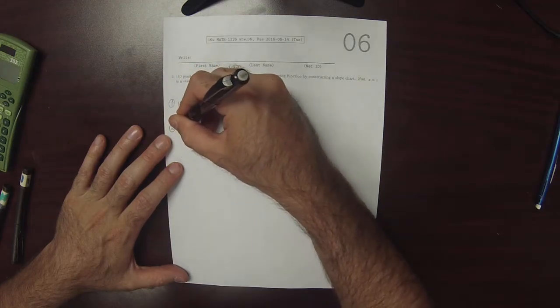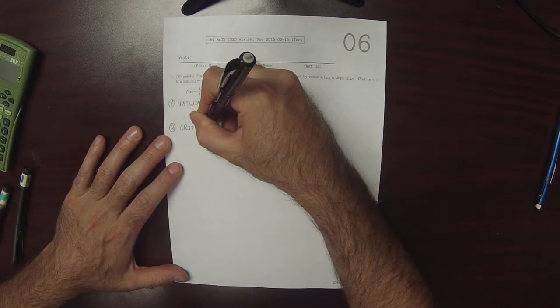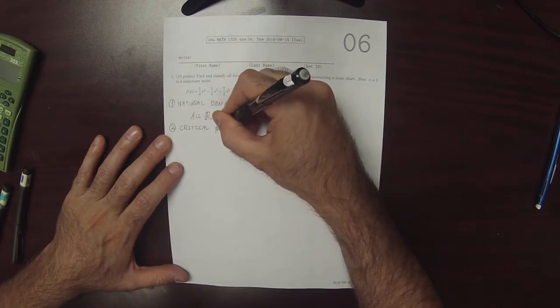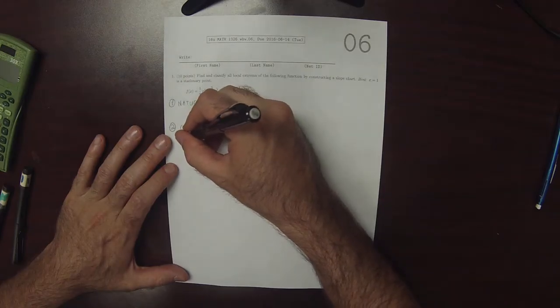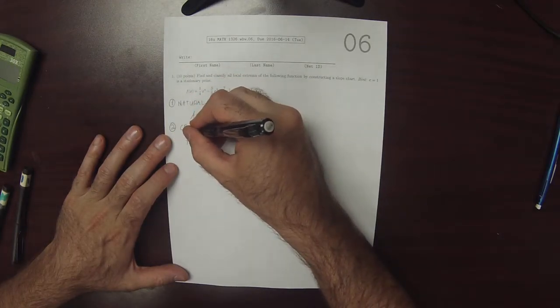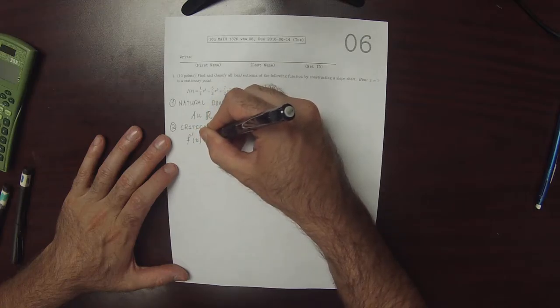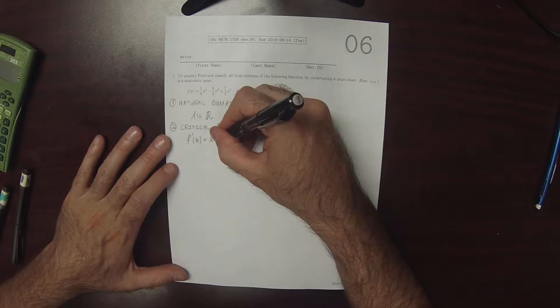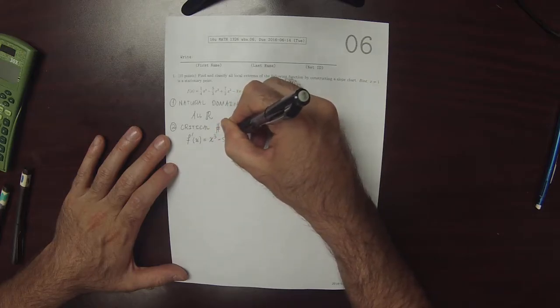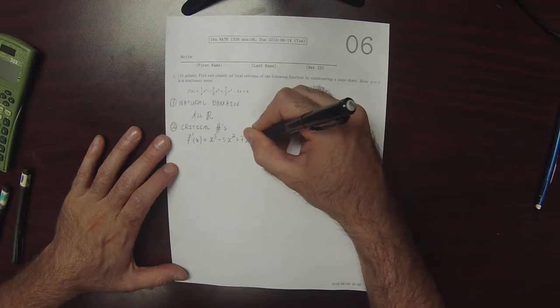Two, we need to find the critical numbers. That is to say where the derivative is undefined or 0. So the derivative is x³ - 5x² + 7x - 3.